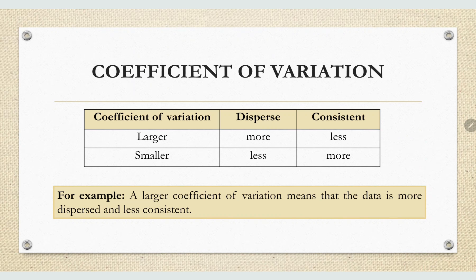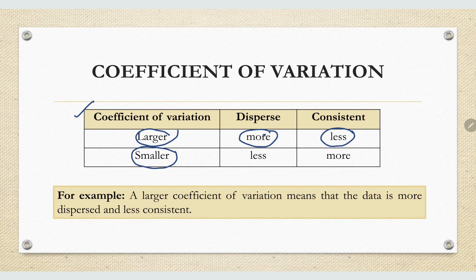Let's look at the table here to compare the coefficients of variation. If the coefficient of variation of one data set is larger compared to the coefficient of another data set, we can say that the data is more dispersed and less consistent. A larger coefficient of variation means the data is more dispersed and less consistent.